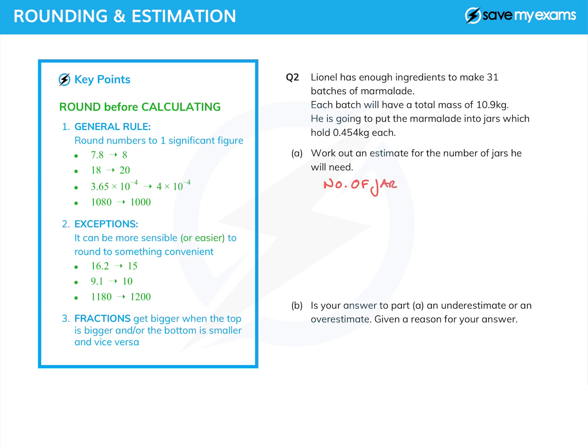What do we do? Well, the first thing we do is we work out how we would calculate the number of jars he needs. The number of jars is the total mass of marmalade over the mass in one jar. So we can write down the exact value for this.